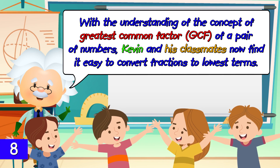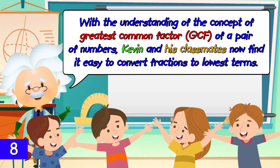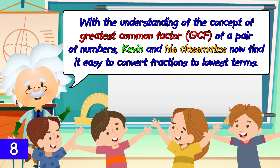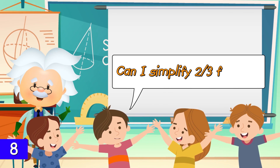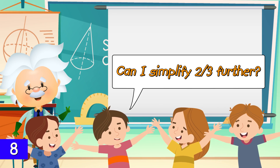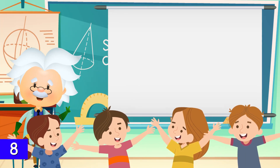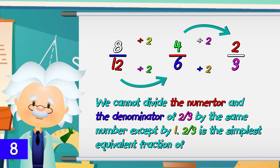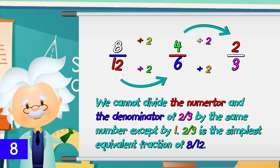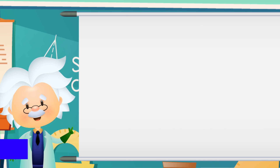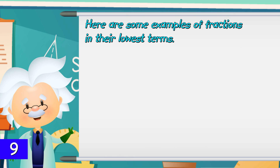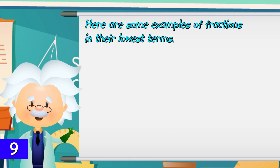With an understanding of GCF, Kevin and his classmates now find it easy to convert fractions to lowest terms. Can we simplify 2/3 further? We cannot divide the numerator and denominator of 2/3 by the same number except by 1. So 2/3 is the simplest equivalent fraction of 8/12.